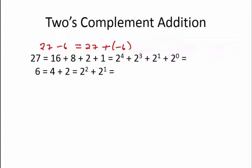27 is equal to 16 plus 8 plus 2 plus 1, which is equal to 2^4 plus 2^3 plus 2^1 plus 2^0. So in two's complement representation, this number is 011011.